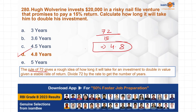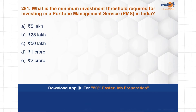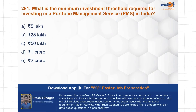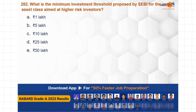D is the correct choice for the Rule of 72 question. Next question: what is the minimum investment threshold required for investing in Portfolio Management Services in India? The minimum requirement for PMS is 50 lakh rupees, so C is the correct choice here.